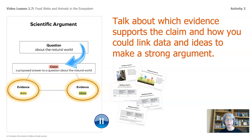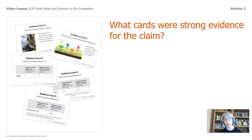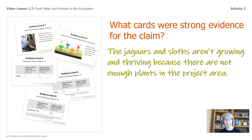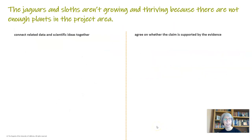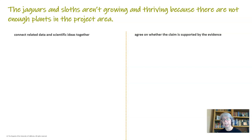Go ahead and pause the video and look through the cards. What cards were strong evidence for the claim? Did you find it difficult to decide? I certainly did. The jaguars and sloths aren't growing and thriving because there are not enough plants in the project area. I want to review our claim one more time. How do we connect the related data and scientific ideas together, and do we agree that the claim is supported by the evidence on the cards?